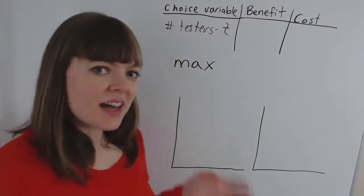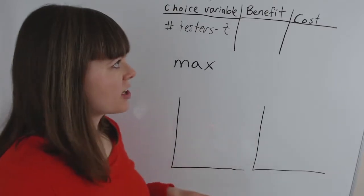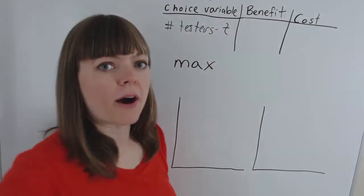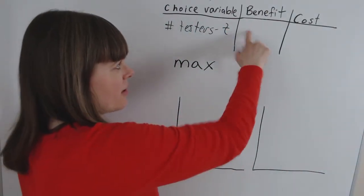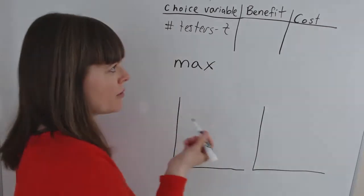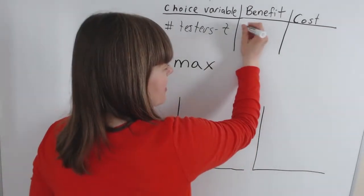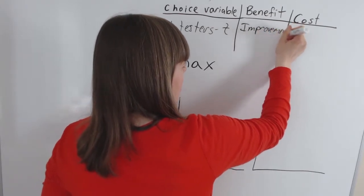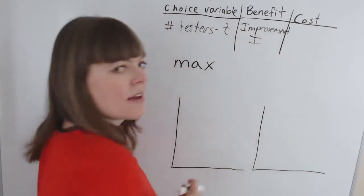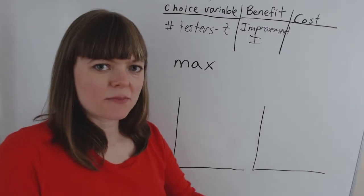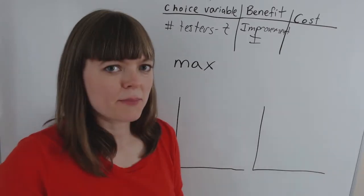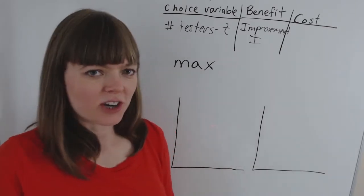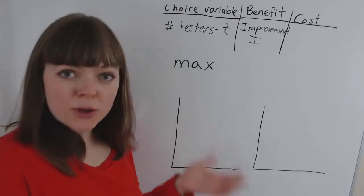And we're going to use a classic benefit minus cost structure for the objective in our model. So first we need to ask ourselves what is the benefit of testing people? And in this case I'm going to say the benefit is improvement in the product. We'll call that I. Meaning the more we test on people the more adjustments we're able to make in the chemical or magical structure of the puking pasties.